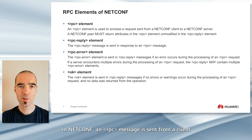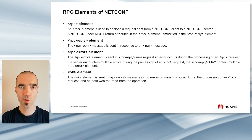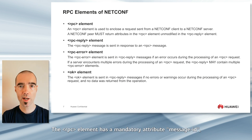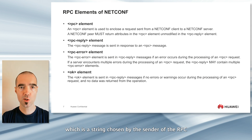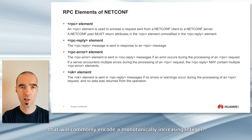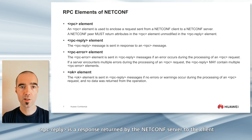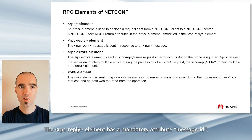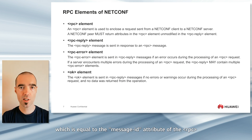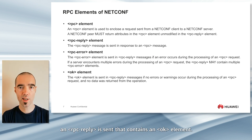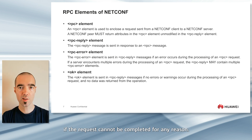In NETCONF, an RPC message is sent from a client to request a server to perform a specific operation. The RPC element has a mandatory attribute message ID, which is a string chosen by the sender of the RPC that will commonly encode a monotonically increasing integer. The RPC and RPC Reply elements are used in pair. RPC Reply is a response returned by the NETCONF server to the client and cannot be proactively initiated. The RPC Reply element has a mandatory attribute message ID, which is equal to the message ID attribute of the RPC for which this is a response. If the device was able to satisfy the request, an RPC Reply is sent that contains an OK element. An RPC error element is included in the RPC Reply if the request cannot be completed for any reason.